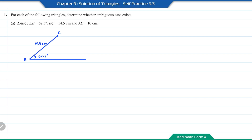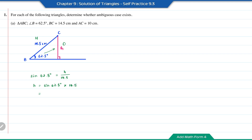We're going to determine the height of this triangle. So we're going to have a right angle triangle here. The height here is the opposite side, whereas the 14.5 will be the hypotenuse. Therefore, we're going to use the trigonometric ratio of sine, which is equal to opposite over hypotenuse to solve for the height. So sine 62.5 degrees is equal to the height over 14.5 cm. To find the height, this will be sine 62.5 degrees times 14.5, which is equal to 12.6 cm.